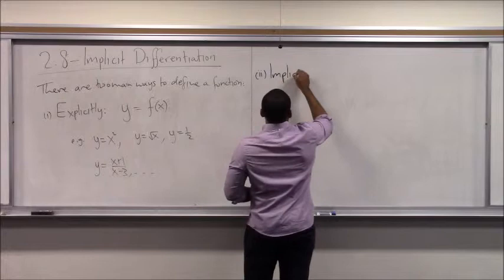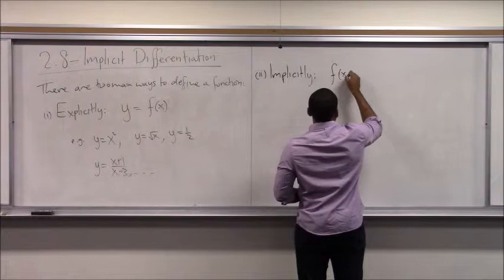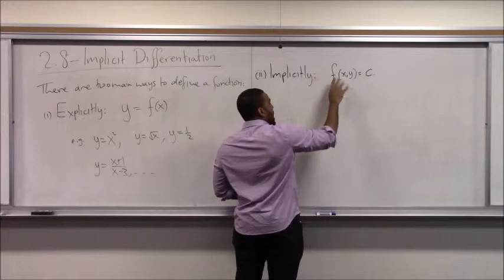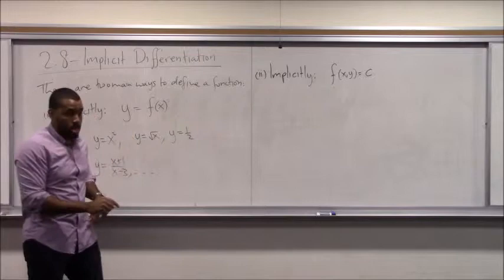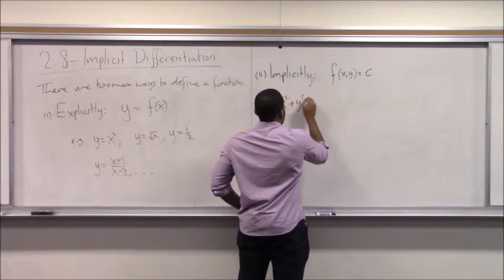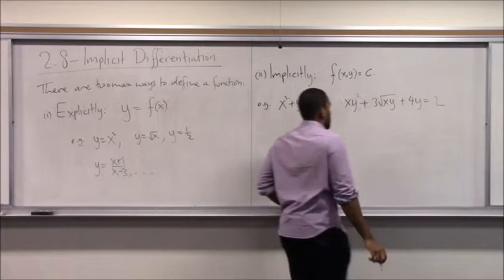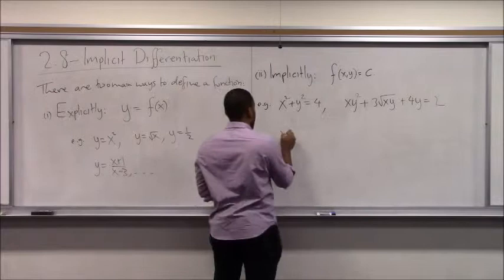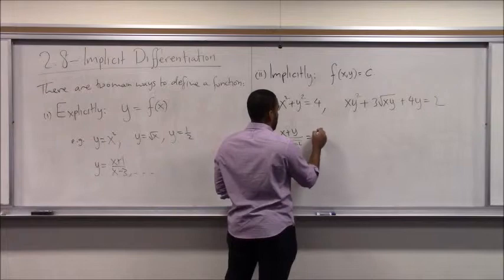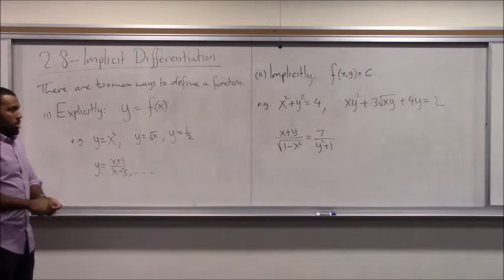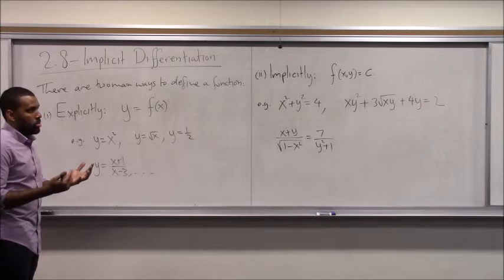There's called the implicit way. The implicit way means you define the equation of a function like this: there's some rule that has x's and y's in the rule, so the x's and y's are mixed up. You don't have the y isolated. Kind of when you have your x's and y's jumbled together.